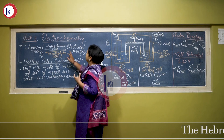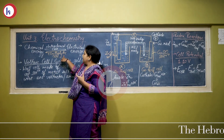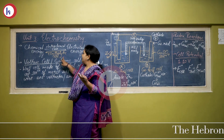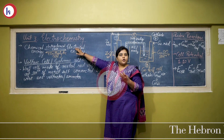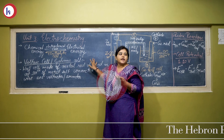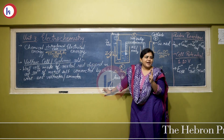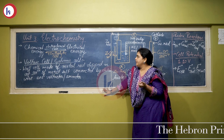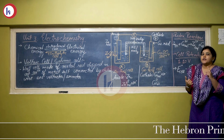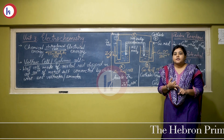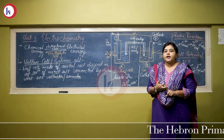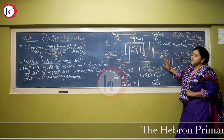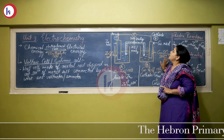Basically, in this chapter, we are going to study two types of cells: one is the electrochemical cell and the other is the electrolytic cell. Today I will be starting with one type of electrochemical cell, that is the voltaic cell or the galvanic cell, which was discovered by two scientists — Alessandro Volta and Luigi Galvani, hence the name. As you can see in the diagram here, this represents the construction of an entire electrochemical voltaic cell.